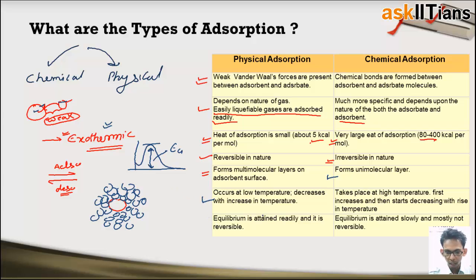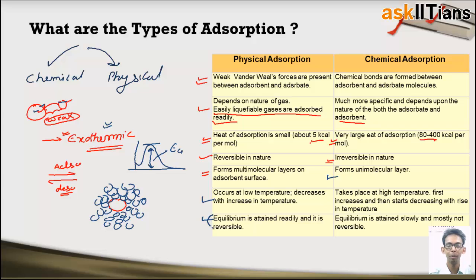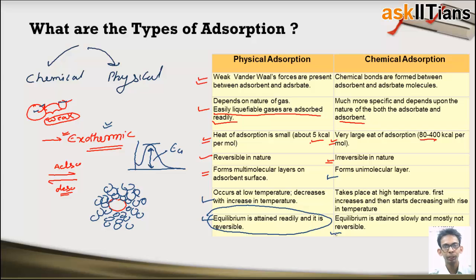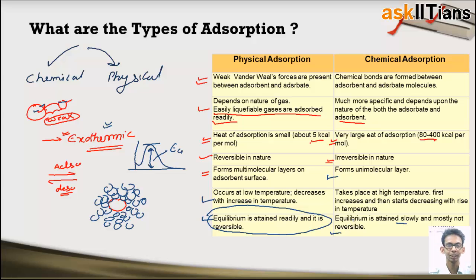Regarding equilibrium: in physical adsorption, equilibrium between adsorption and desorption is attained quickly because it is a fast process. In chemical adsorption, equilibrium is attained slowly, and most of the time there is no equilibrium established between chemical adsorption and desorption, because chemical adsorption is irreversible in nature. This was the difference between chemical adsorption and physical adsorption.